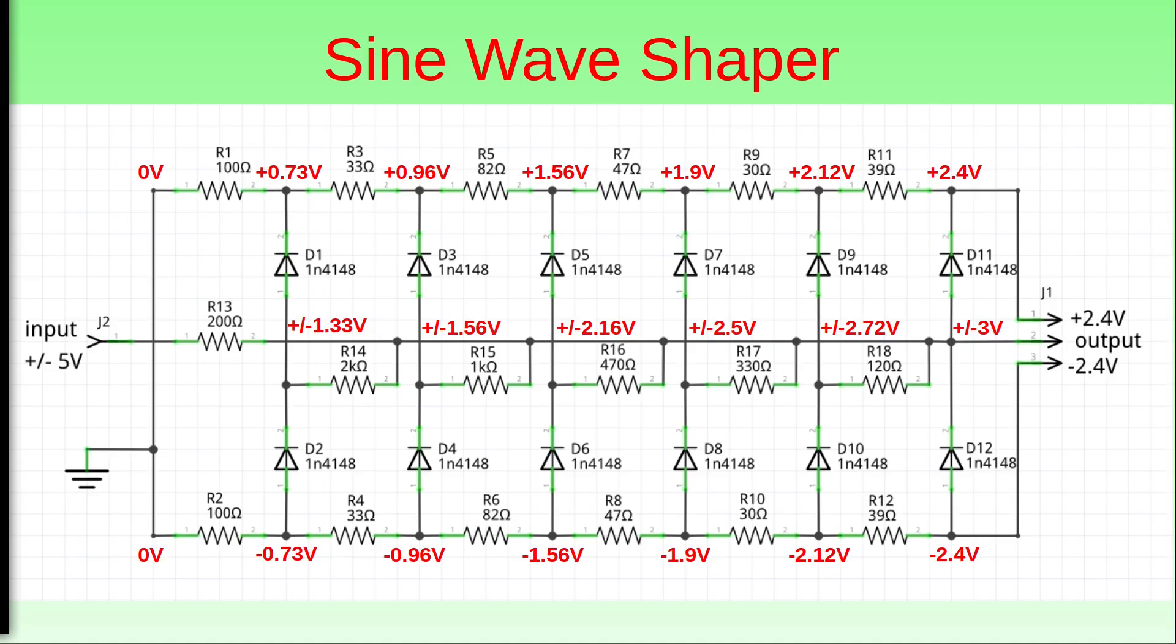You can understand now why I said that if there is no voltage at the input, all the diodes are inversely polarized, and therefore they are all open circuits.